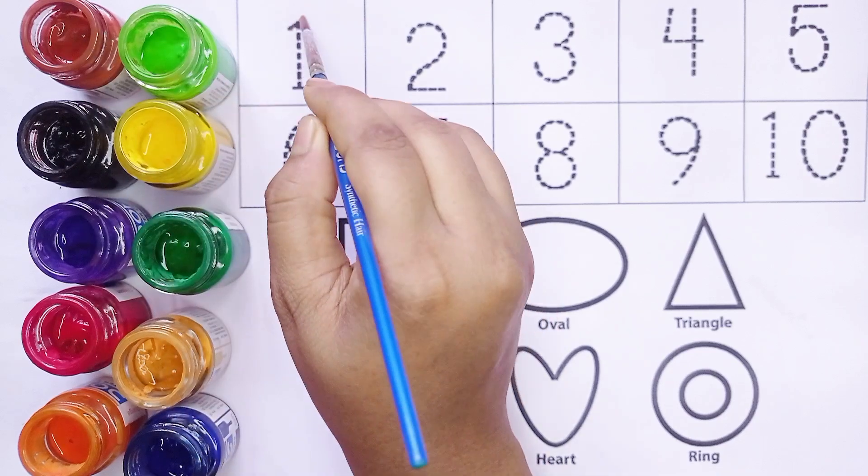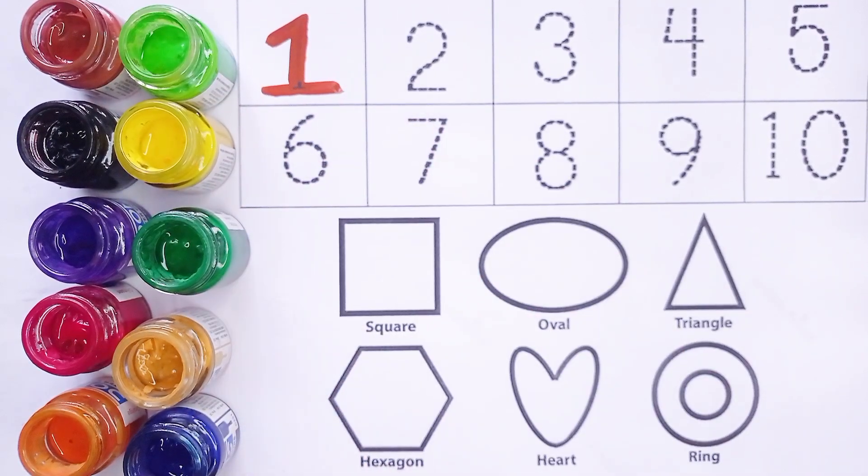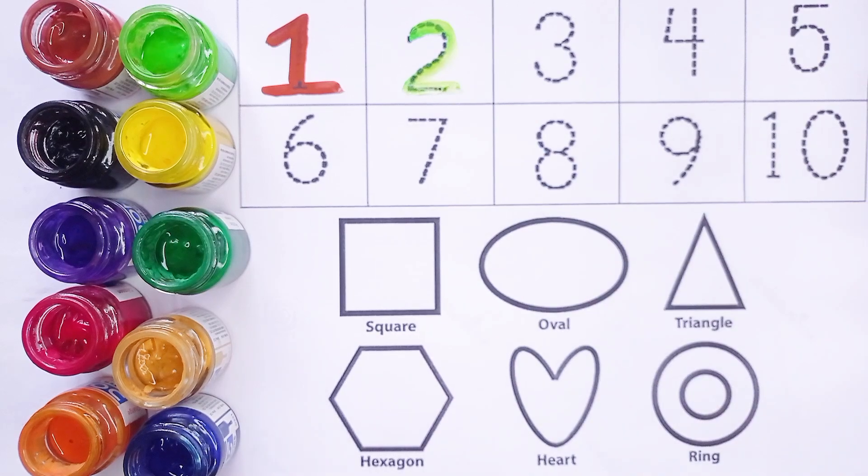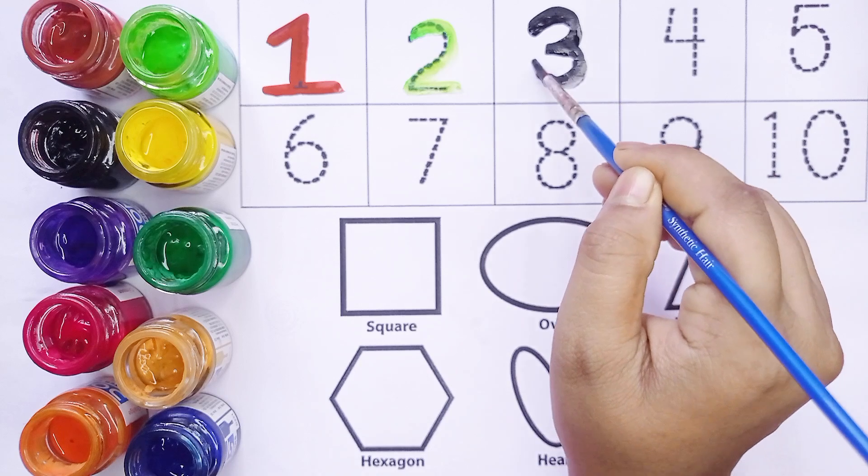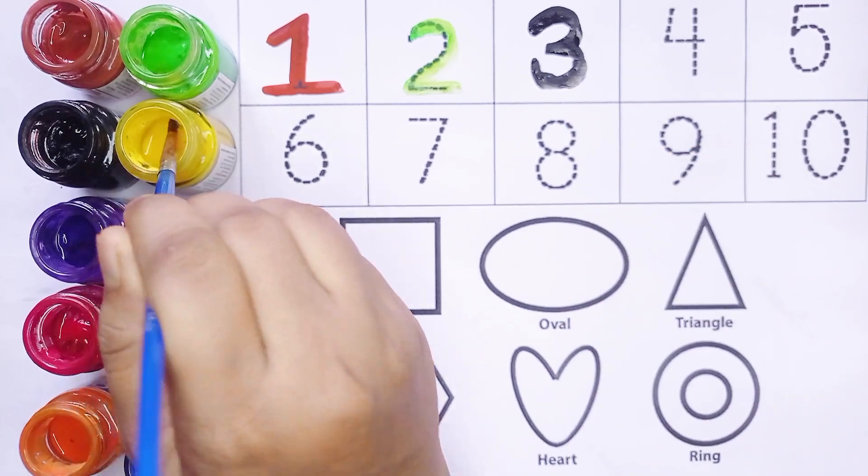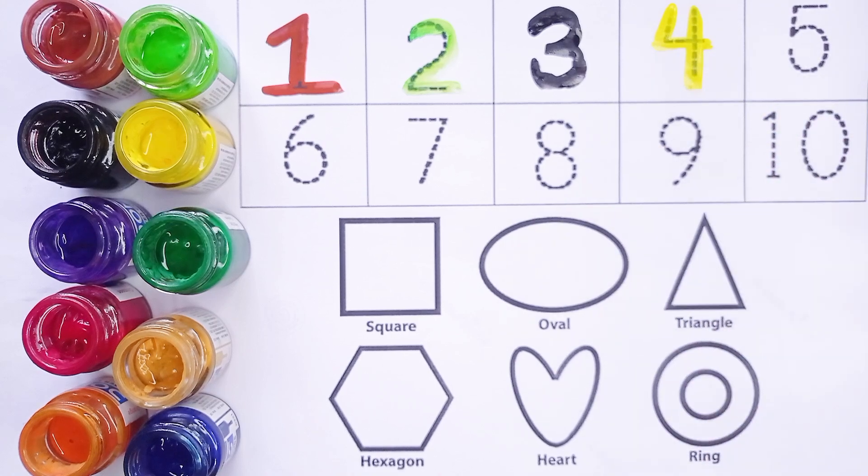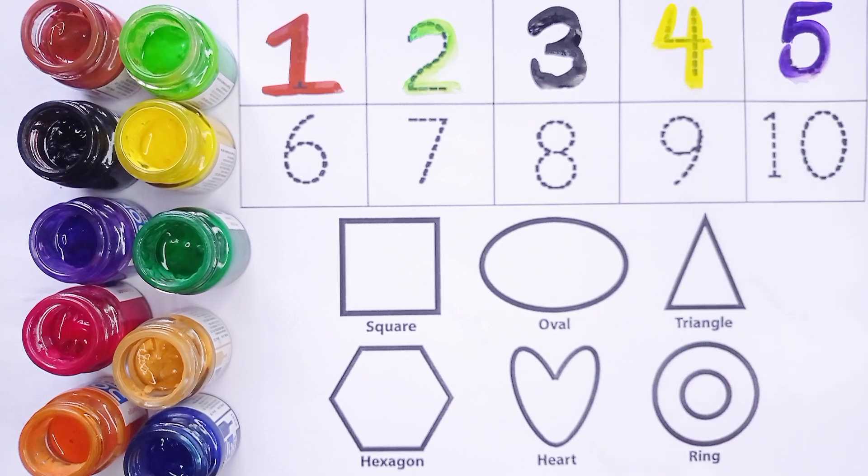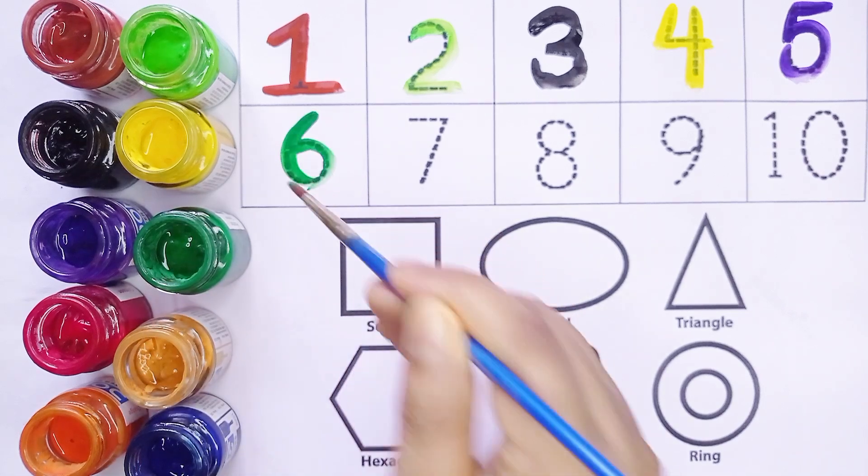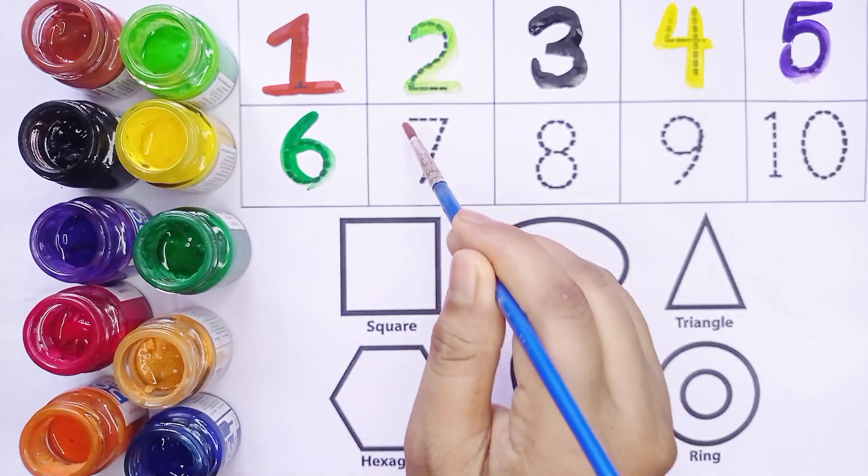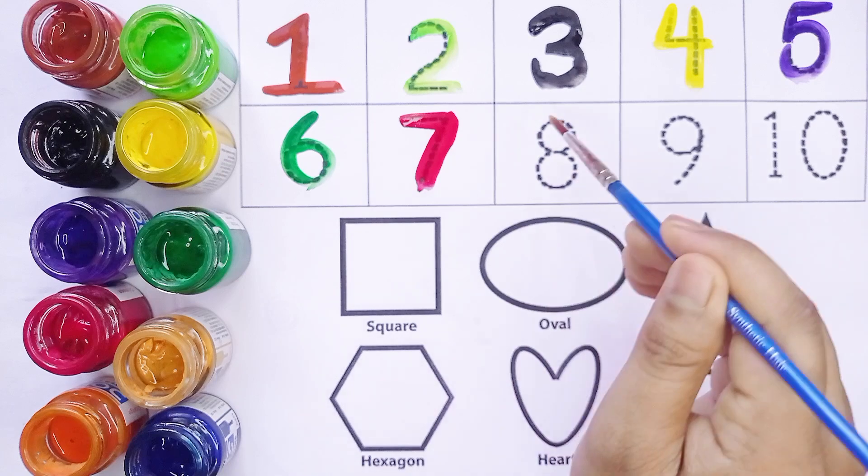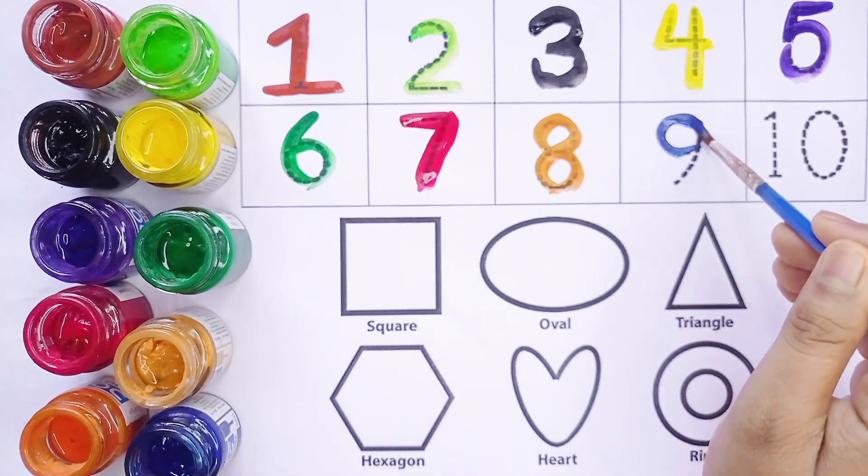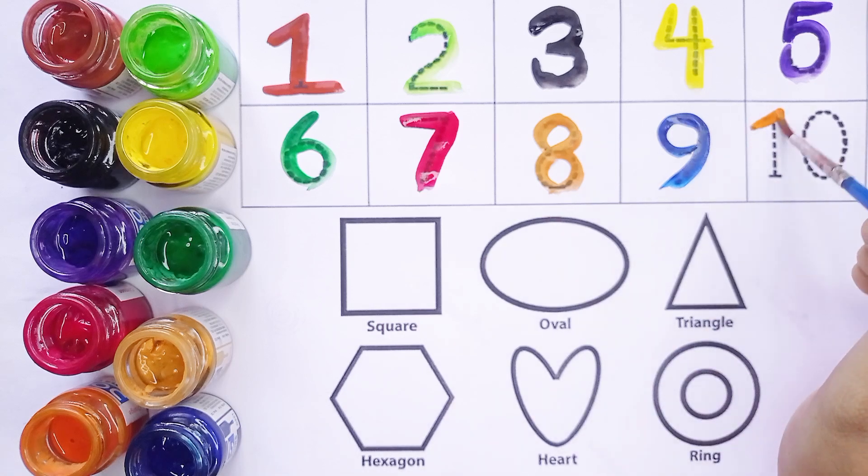1, 2, 3. Green color. 2 ke baad 3. Black color. 3 ke baad 4. Yellow color. 4 ke baad 5. Violet color. 5 ke baad 6. Green color. 6 ke baad 7. Red color. 8. Yellow color. 9. Orange color. 10. Orange color.